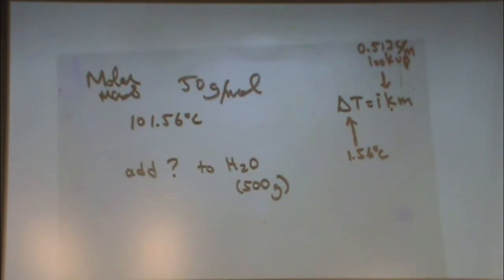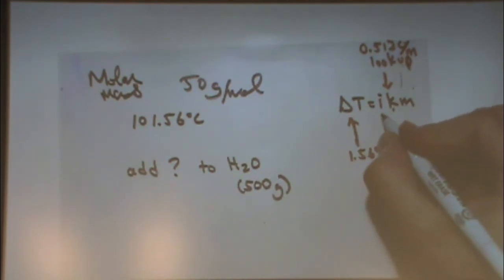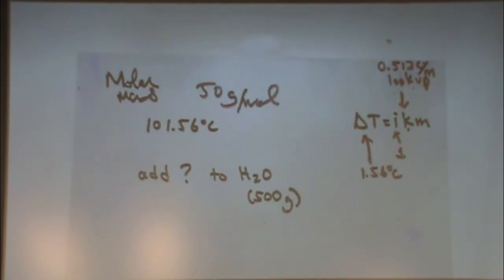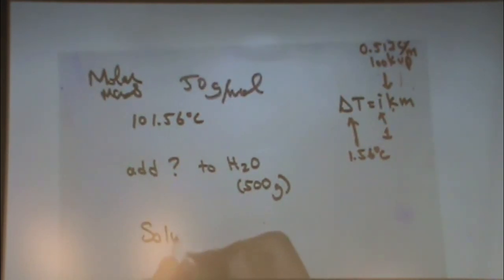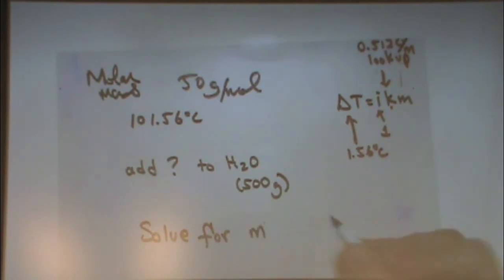So let's take a look at I. It says it's a molecular substance in the question. So what must I be? One. If it's molecular or organic, you know it's going to be one. The only type of substance that's not going to have a value of one for I is what kind of substance? An ionic compound. So that's the only one that would not be a value of one here.